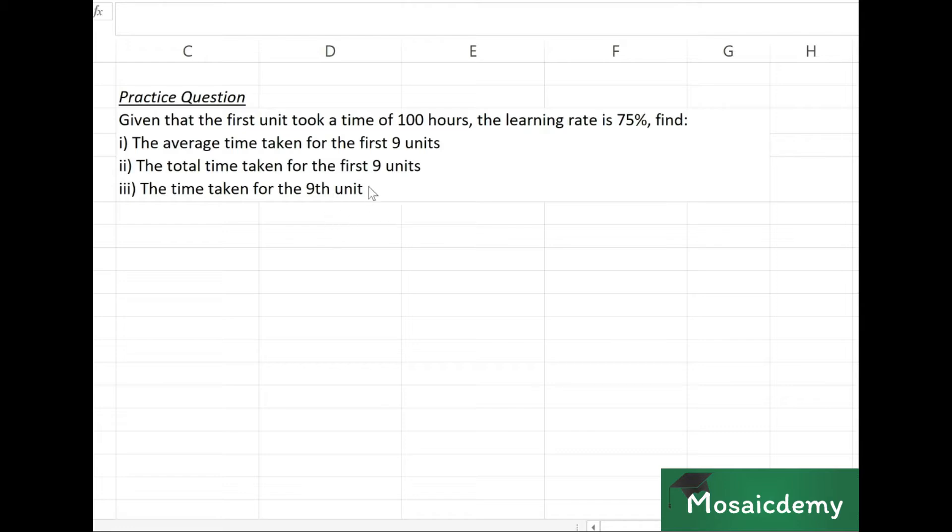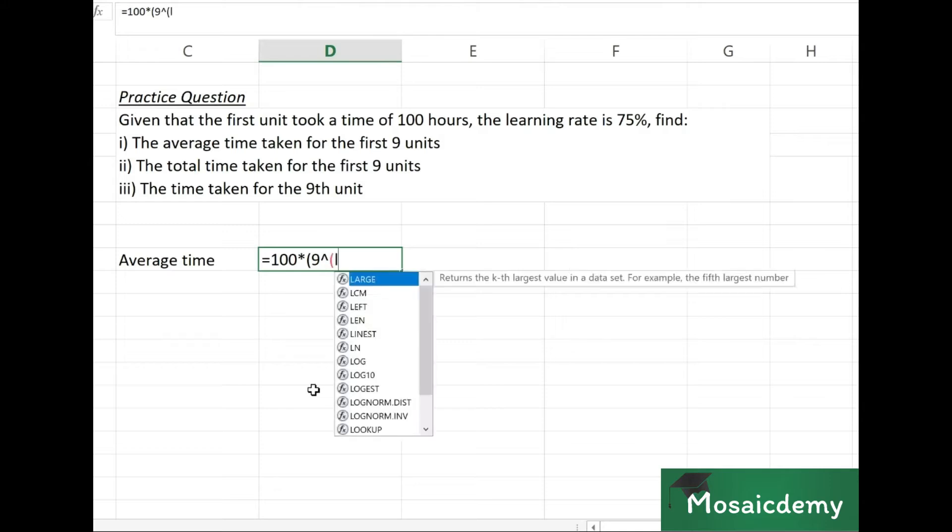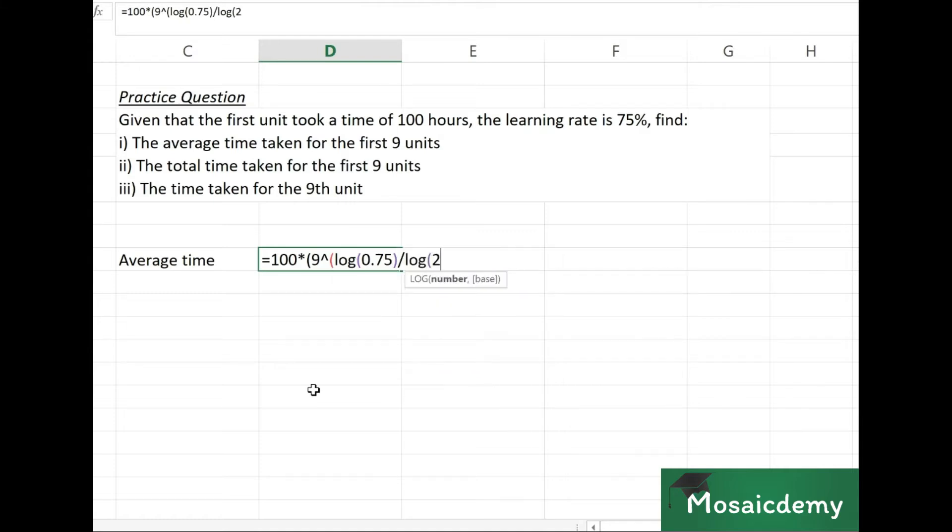Let's start with average time for the first 9 units. That's based on the formula y = ax^b. So a in this case is 100 hours, times x the number of units (9), raised to power b which is log of the learning rate (0.75) divided by log of 2, always log of 2. That gives us the average time taken for the first 9 units: 40.17 hours.